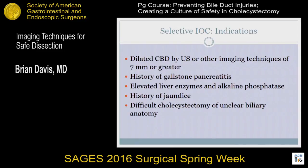Indications for the selective cholangiogram include a dilated duct by CT or ultrasound, history of gallstone pancreatitis, elevated enzymes and alkaline phosphatase, a history of jaundice, or intraoperatively in the difficult cholecystectomy where a critical view of safety cannot be readily obtained.